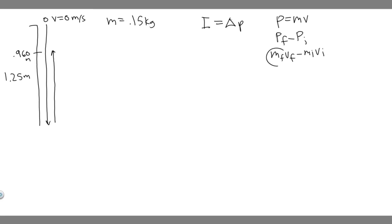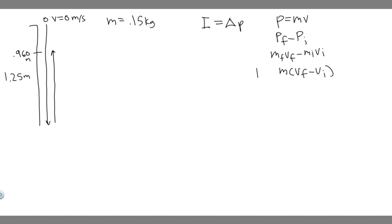Notice that the final mass and the initial mass are both the same, so we can factor them out and just call it m. It simplifies to m times (v_final minus v_initial). So to solve for impulse I, we need the mass and both the final and initial velocities.